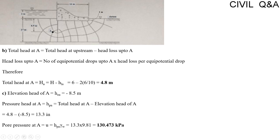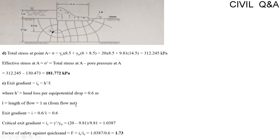This gives the pressure head at A as 13.3 meters. Pore water pressure at A equals pressure head times unit weight of water: 13.3 × 9.81. Total stress at point A equals unit weight of soil × depth to A (8.5 m) plus unit weight of water × total water depth (6 + 8.5 = 14.5 m). Putting values: 20 × 8.5 plus 9.81 × 14.5 gives the total stress at A.